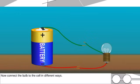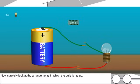Now connect the bulb to the cell in different ways. Now carefully look at the arrangements in which the bulb lights up.